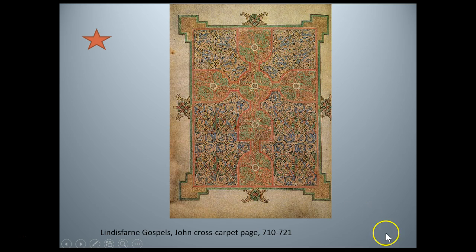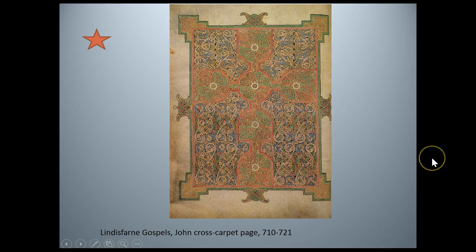We're looking at this very highly ornamental cross carpet page. You can understand why they're called carpet pages, because they really do reference or look like an oriental rug. Each features a large cross set against a background of ordered yet extravagant ornamentation. The gospels themselves are each introduced by a historiated initial, and the codex also includes 16 pages of canon tables set in arcades, where correlating passages from each evangelist are set side by side, enabling a reader to compare narrations.